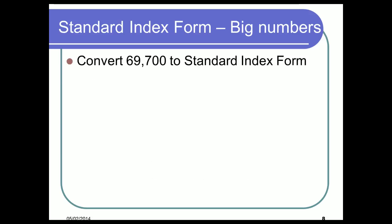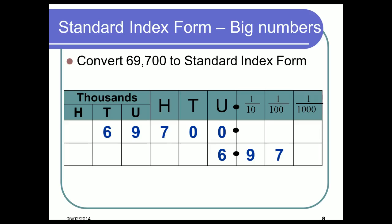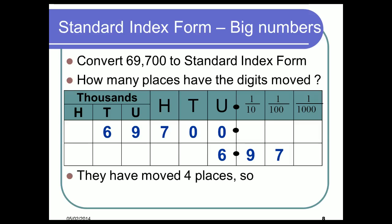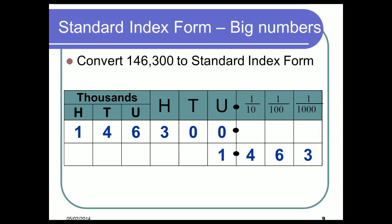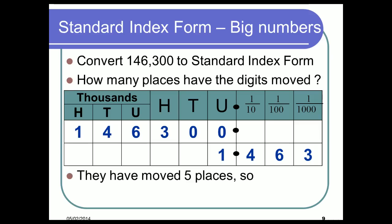What about 69,700 in standard index form? If we move the decimal point after the first digit, we'd have to move it 1, 2, 3, 4 spots to get back to 69,700. So we'd get 6.97 × 10⁴. Similarly, 146,300: the digits have moved 5 places, so it's 1.463 × 10⁵.